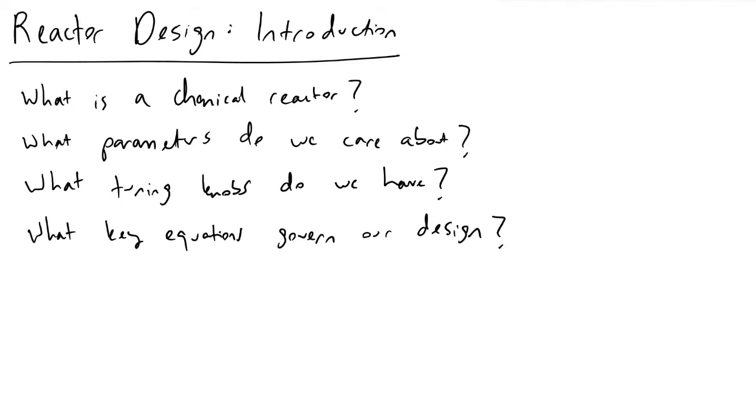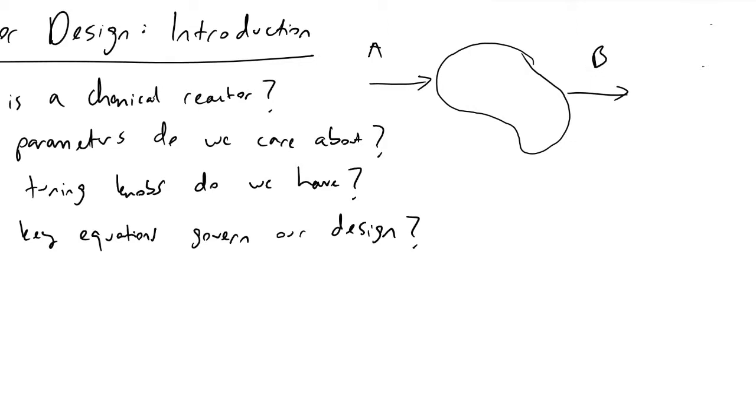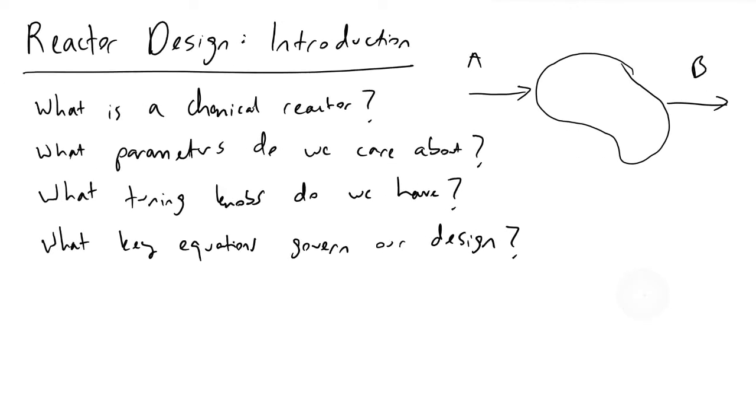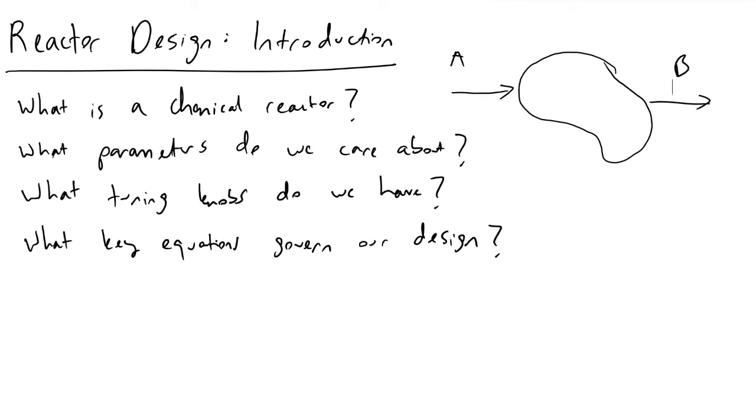If I were to sketch a very generic control volume in which we had some flow coming in and some flow coming out, I'll have a component A that I want to convert into component B. We know that no process is perfect and we're always going to have some byproducts, so unreacted A.